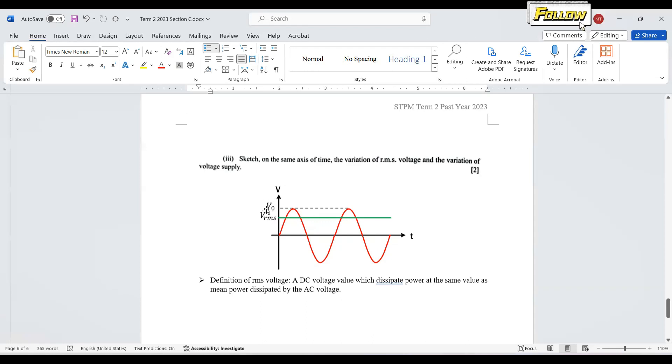We know that V0 divided by sqrt2, that is the RMS voltage. And the voltage supply is an AC supply, so it should be a sine wave. So I think this should be the graph. And that's all for this question. Thank you.